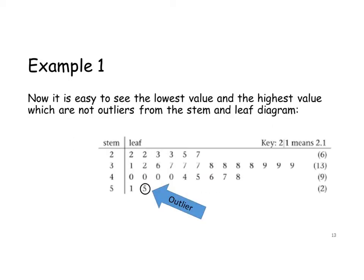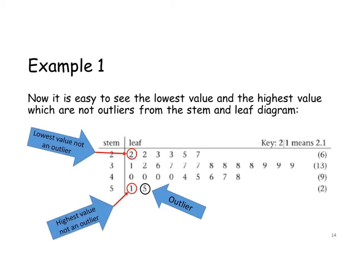We also need to know the highest value and the lowest value. This is very easy to see from a stem and leaf diagram. The lowest value is the first number. The highest value is the last number, but we want the highest value that isn't an outlier, so that will be the next number in. The lowest value, not an outlier, will be 2.2. And the highest value that's not an outlier will be 5.1 — remember, the key tells us what the numbers mean.